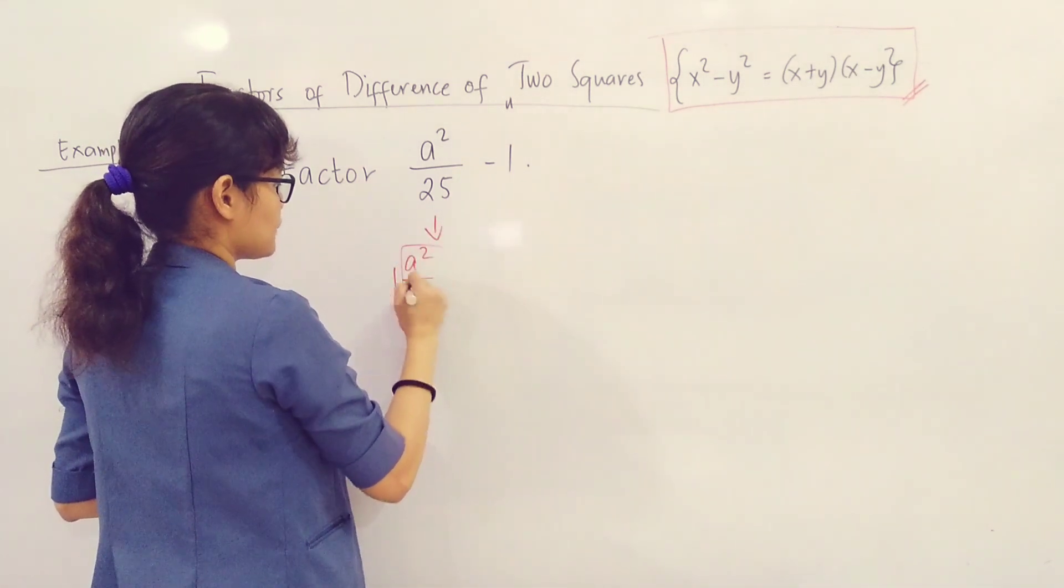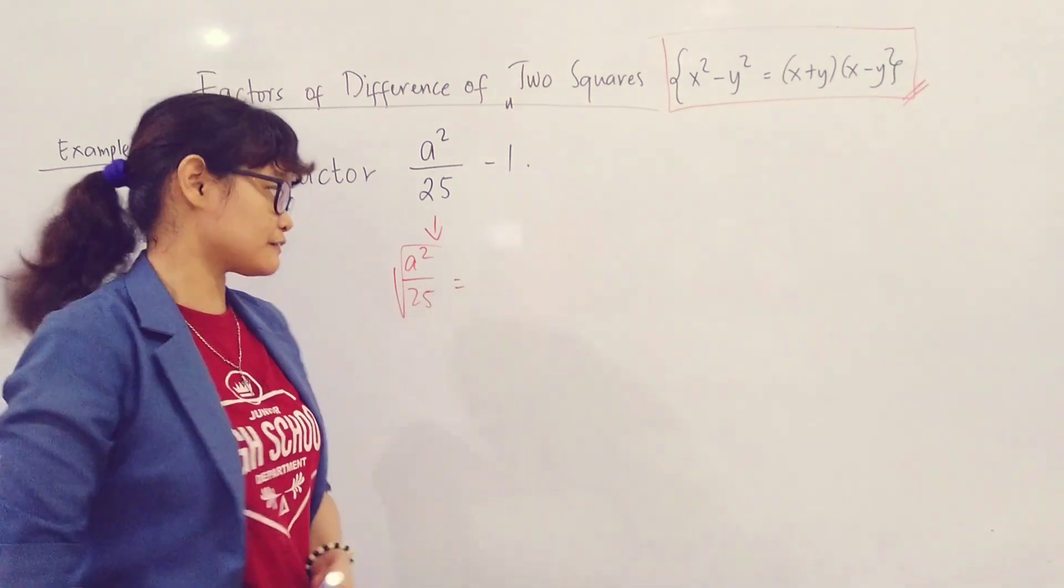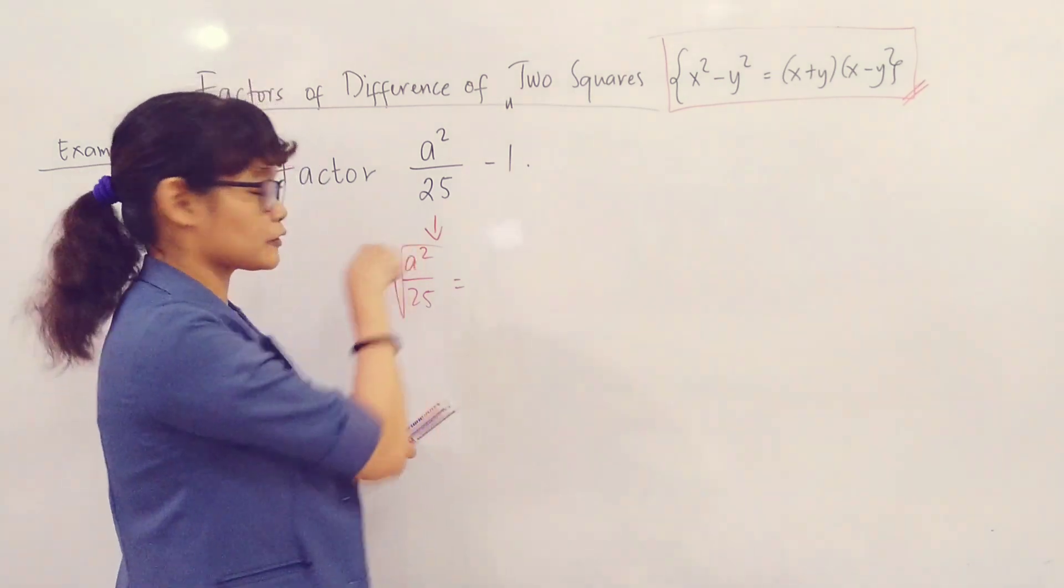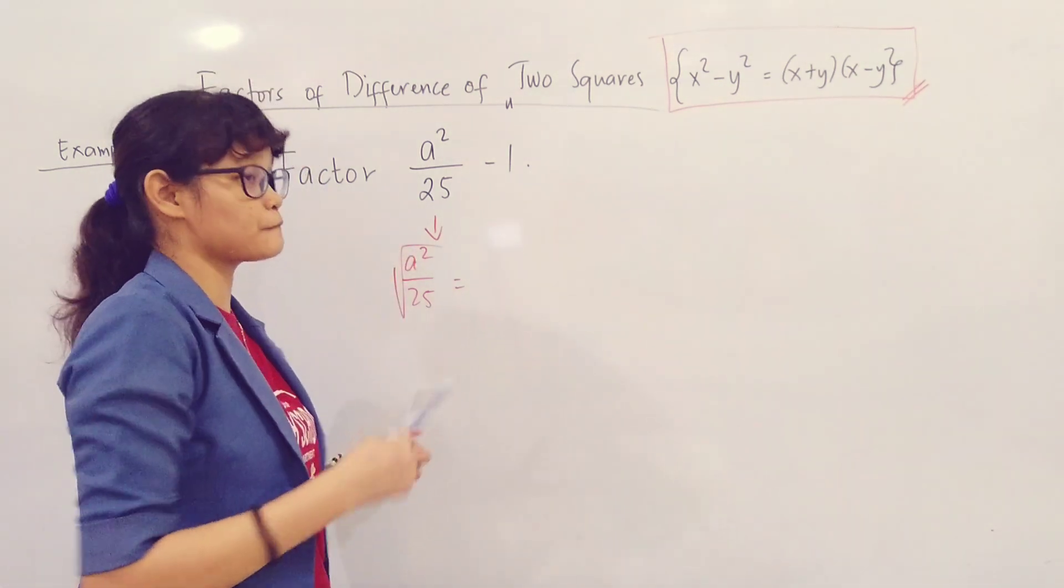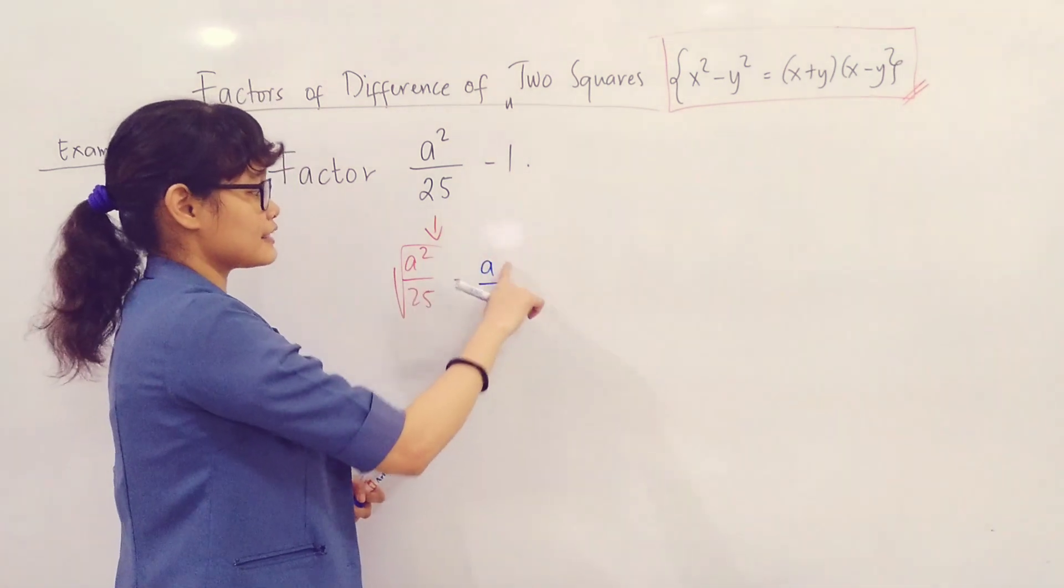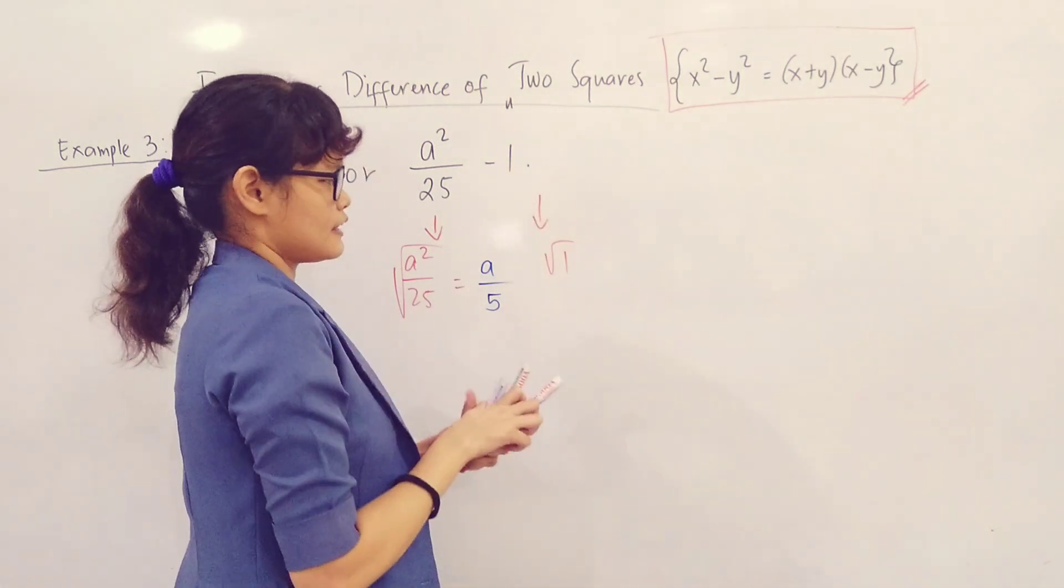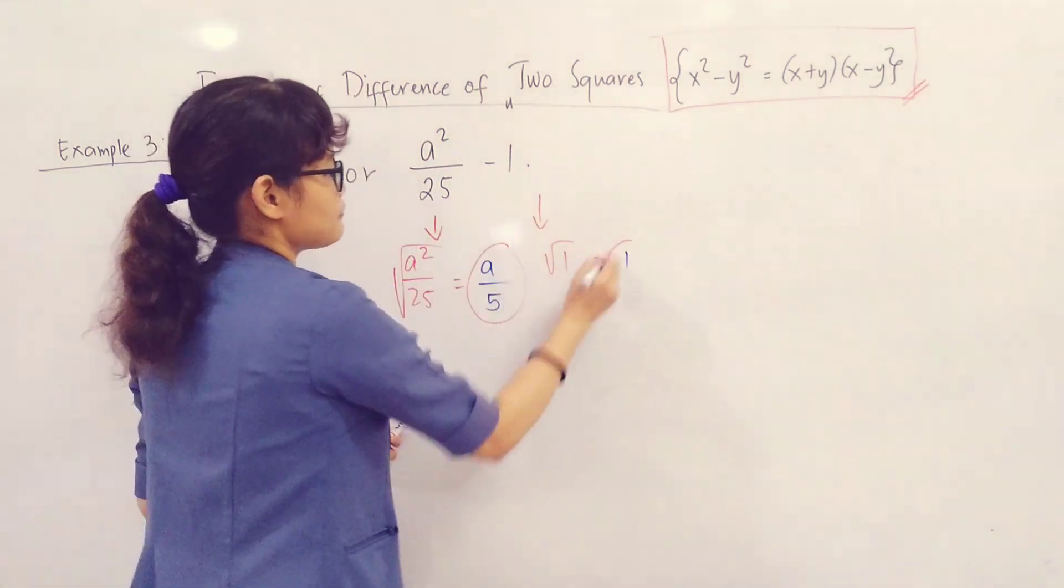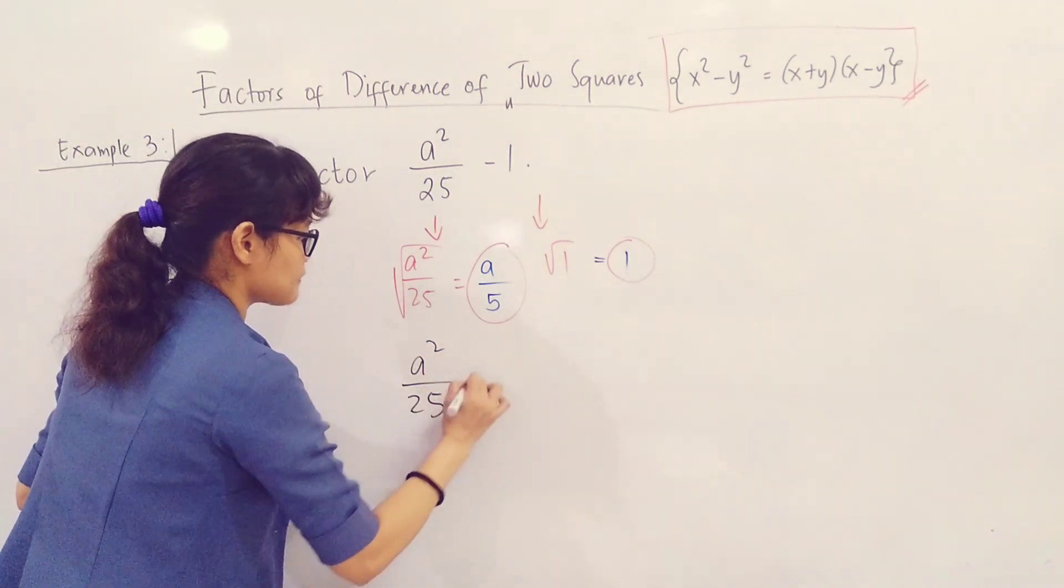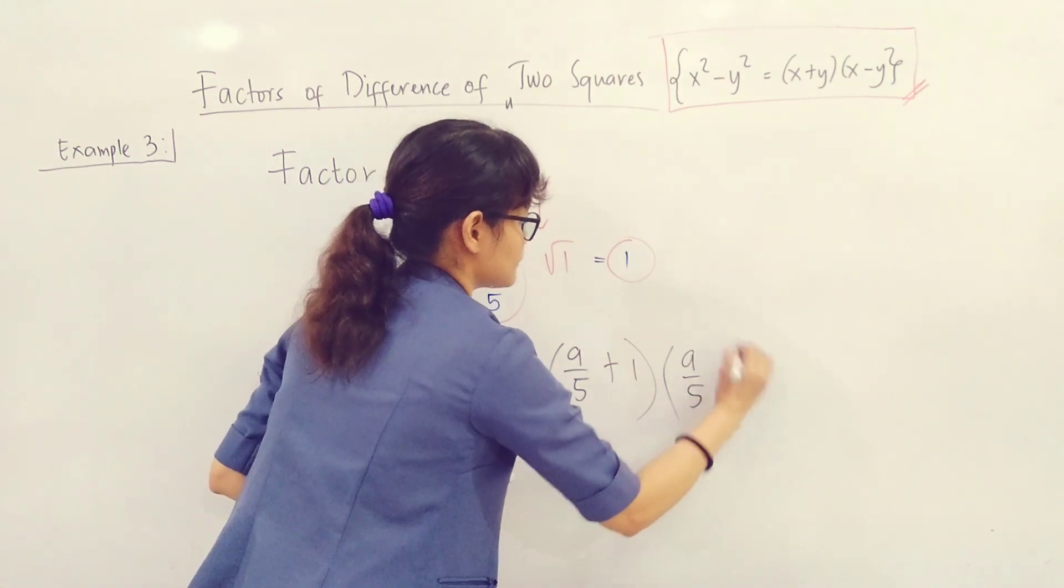No common factors because these two terms are relatively prime with one another. Let us get its principal square root. How do you extract the square root of a fraction number? Very simple - extract the square root of both the numerator and the denominator. What is the square root of A squared? Divide its exponent by 2. Therefore, its square root is A over 5. The square root of 1 is equal to 1. We have our principal square roots. Therefore, A squared over 25 minus 1 is simply equal to the product of A over 5 plus 1 times A over 5 minus 1.